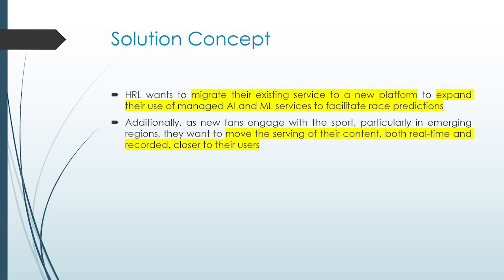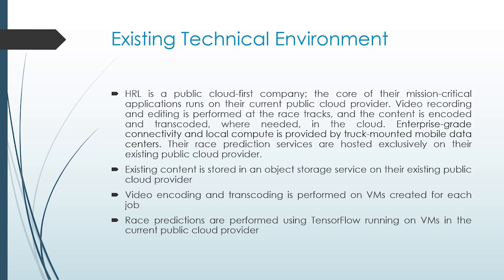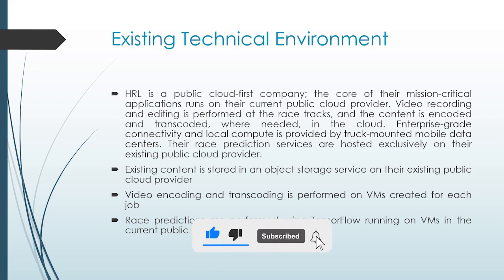Now let's look into the existing technical environment. HRL is a public cloud-first company — the core of their mission-critical applications run on their current public cloud provider. Video recording and editing is performed at the race tracks, and content is encoded and transported in the cloud. Enterprise grid connectivity and local compute is provided by truck-mounted mobile data centers. Race prediction servers are hosted exclusively on the existing public cloud provider, and existing content is stored in an object storage service.